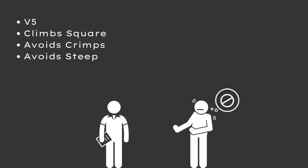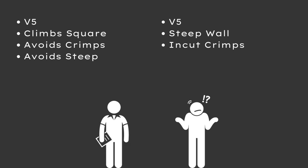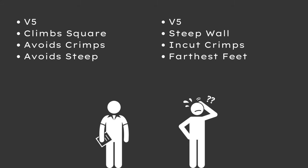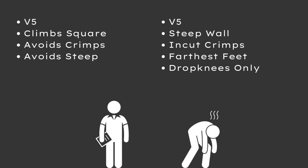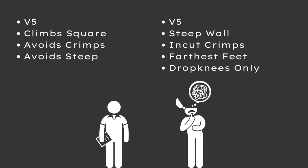This climber avoids crimps, prefers to climb open-handed or on slopers, and avoids really steep terrain — they feel most comfortable on lightly overhanging walls. So you as the coach get really granular with all the difficulties: you choose a V5 on a really steep wall with in-cut crimps, say use the feet furthest away and drop knee your way up. You've added a lot of difficulty, but now you're creating chaos — tough angle, uncomfortable holds, challenging mobility, and a hard grade.